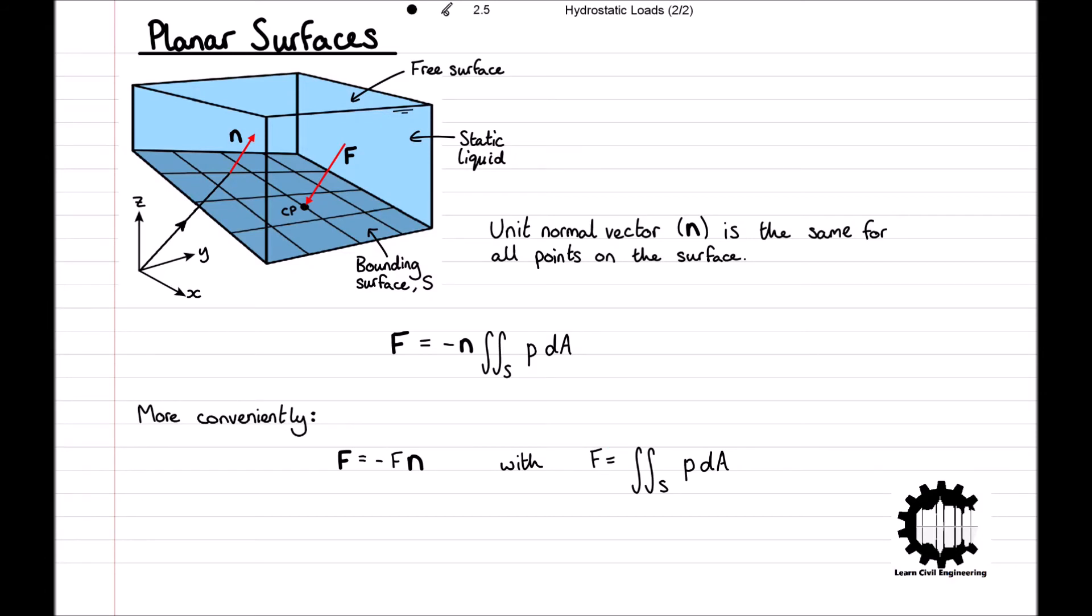The direction that this load acts is just opposite to the unit outward normal vector to the surface, which is negative n.